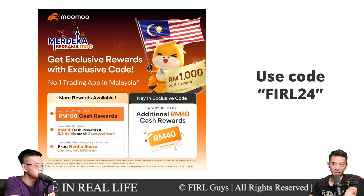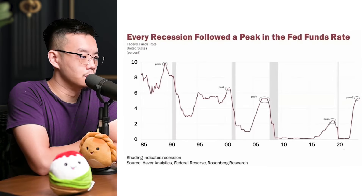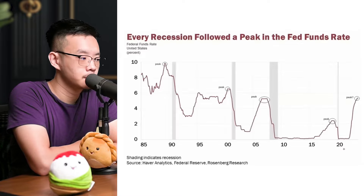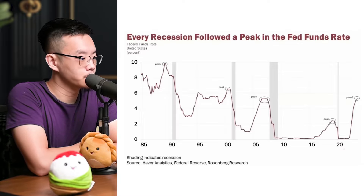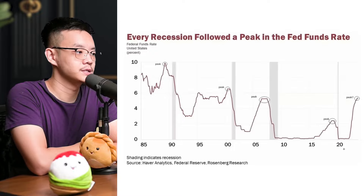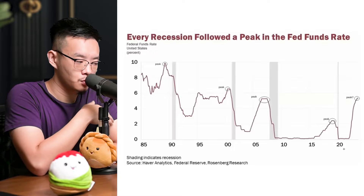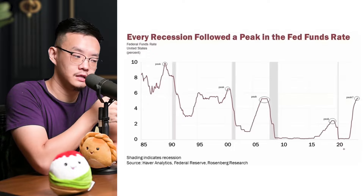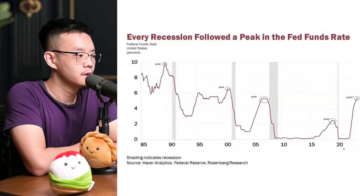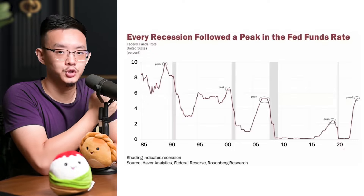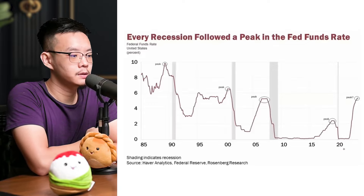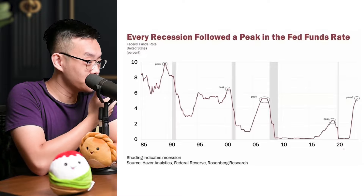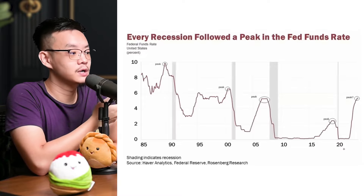Now there's a chart here. The shaded lines indicate a recession. What we're trying to figure out is how the Fed funds rate — the interest rate determined by the Federal Reserve in America — correlates with a recession. What we can see here is that typically a recession happens when, ironically, the Fed starts to cut rates.